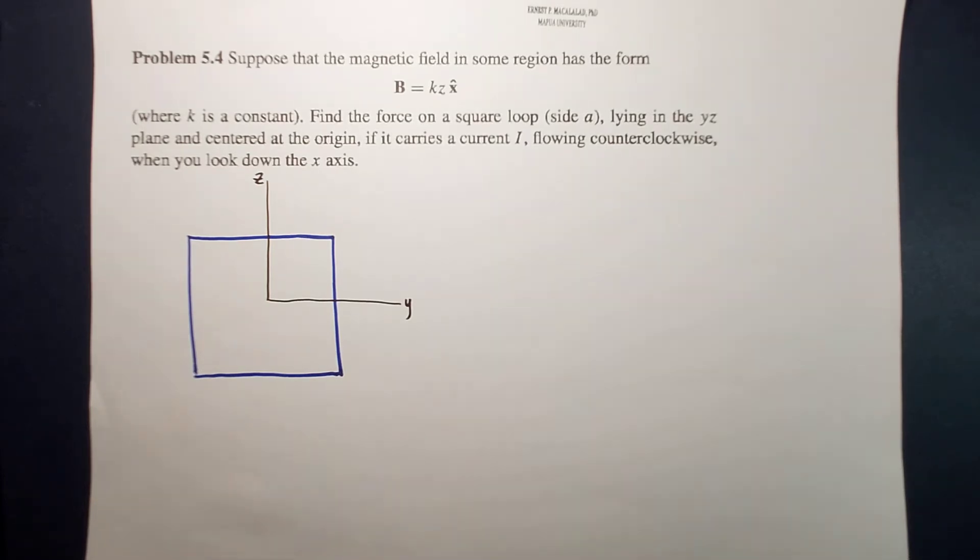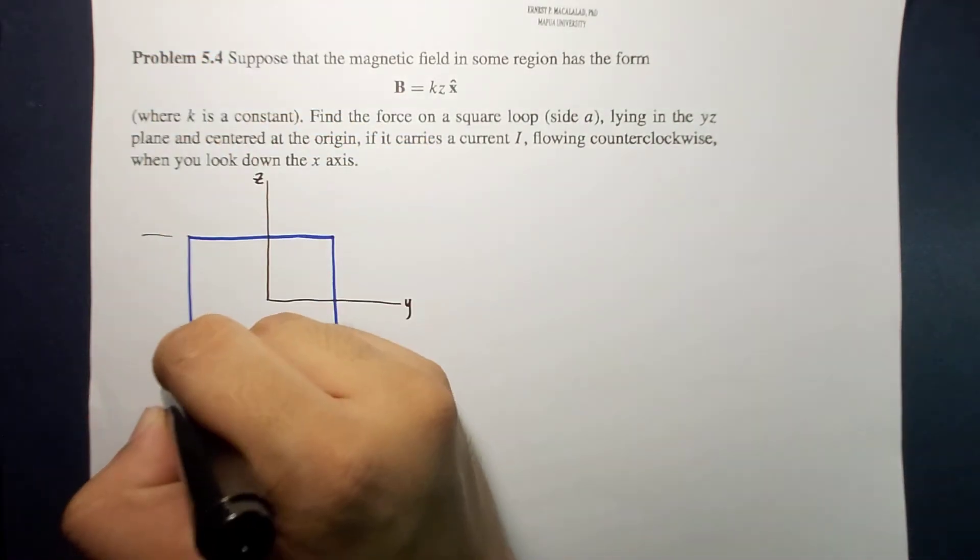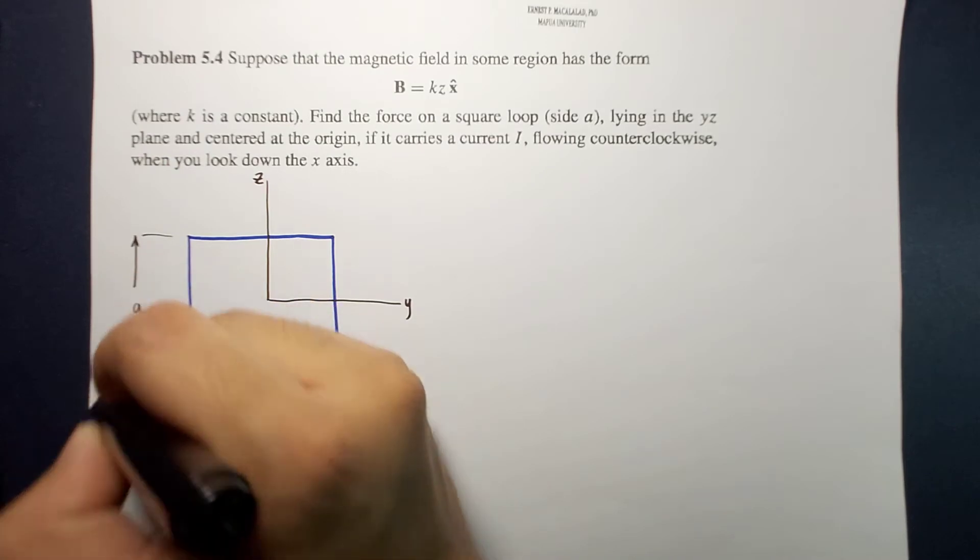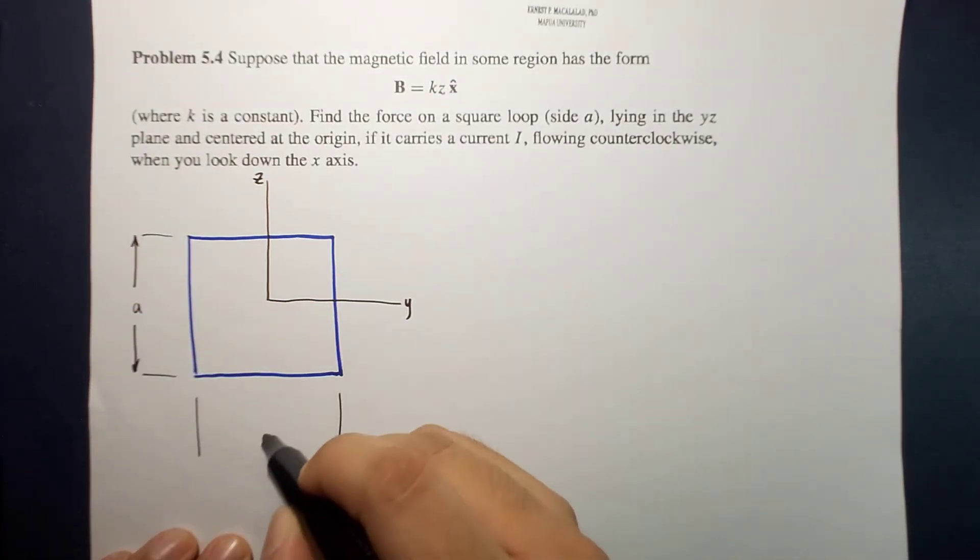Okay, so I'm trying to draw the square loop reasonably large. It is mentioned here that the square loop has side a, so this is a and this is a.